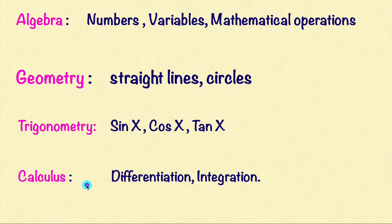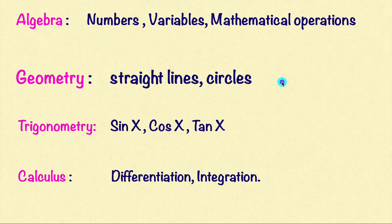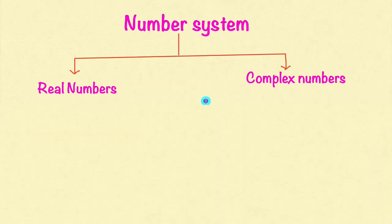In this two-year course, we are going to learn mainly these four topics. In addition, other things are also there like vector algebra and three-dimensional geometry. But these are the main four branches of mathematics. As I said, we are going to learn about number system in this class. Number system is mainly divided into two types: one is real numbers and another one is complex numbers. Till now in SSLC, whatever numbers you studied, they are all real numbers.